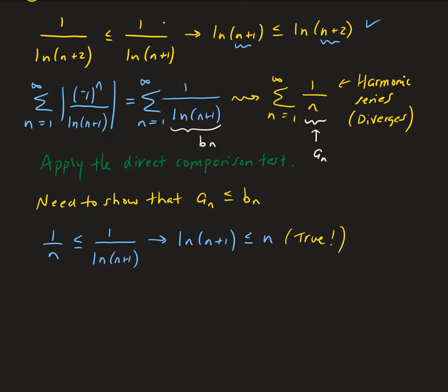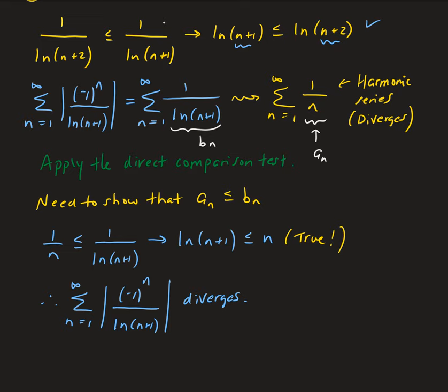This is true. Therefore, the absolute value of the original series is diverging. We took the absolute value and got the series of 1 over natural log of n plus 1 and showed that this series diverges using the direct comparison test. So that means the original series is conditionally convergent.